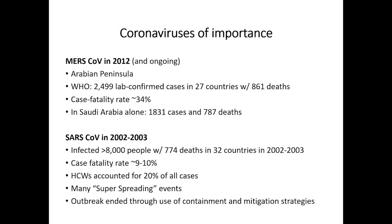Looking back retrospectively at what we know about these coronaviruses: in the Arabian Peninsula, the 2012 MERS outbreak resulted in almost 2,500 lab-confirmed cases in 27 countries and 861 deaths — about a 34% case fatality rate. In Saudi Arabia specifically, there were 1,831 cases and 987 deaths. With SARS in 2002–2003, greater than 8,000 people were infected, 774 deaths in 32 countries, with a case fatality rate between 9–10%. About 20% of healthcare workers became infected in both SARS and MERS.